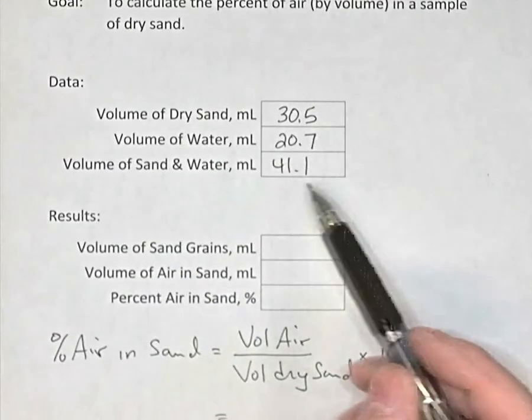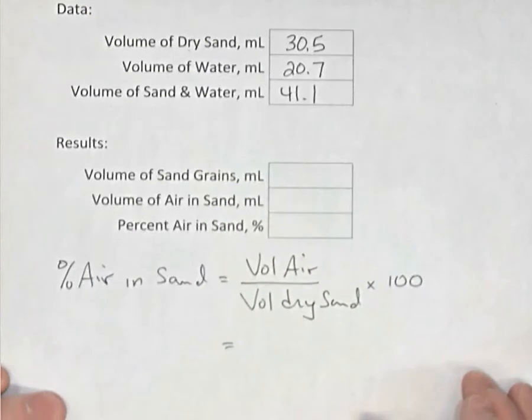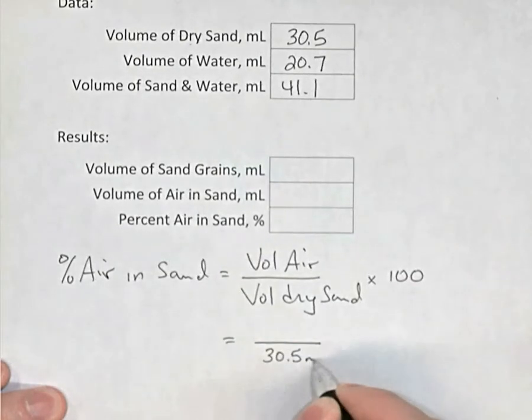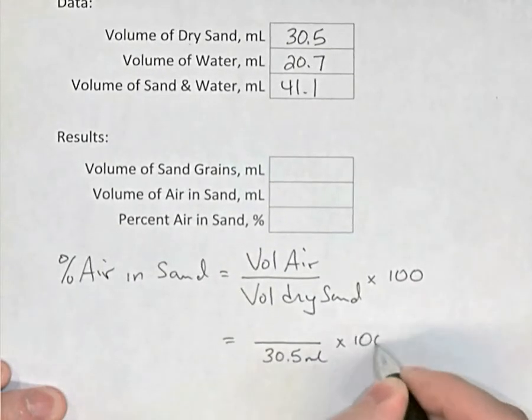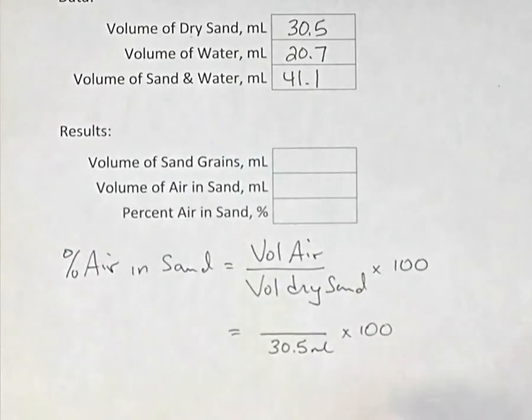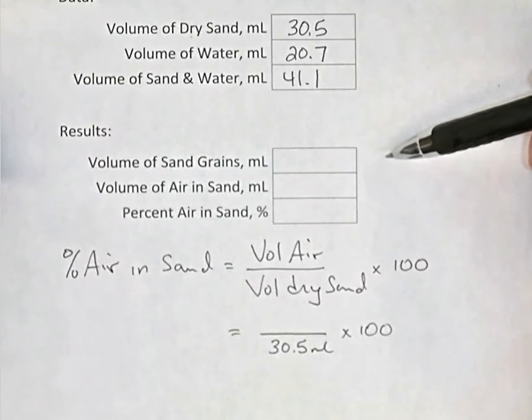we know the volume of the dry sand was 30.5 milliliters, but we don't know the volume of air. So we can say this is going to equal something divided by 30.5 milliliters times 100. So we need to figure out the volume of air that was in the dry sand. Well, there's more than one way to do that, but here's one method. This is the way our data table was laid out and our results table was laid out in our science booklet.